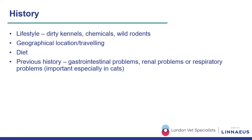Diet is also relevant as it might highlight nutritional deficiencies or suggest hypersensitivities. A previous history of gastrointestinal, renal, or respiratory problems may also be important. For example, gastrointestinal problems might drive attention towards food-induced allergic skin disease, while in cats with respiratory problems we might consider viral conditions.